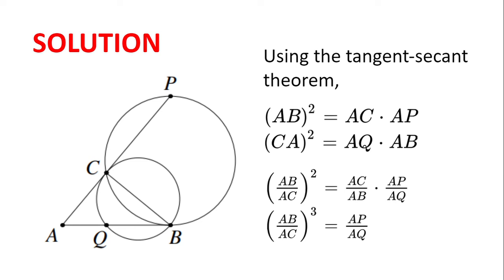Now, using the tangent secant theorem on the smaller circle, AC squared is equal to AB multiplied by AQ. And then multiplying both sides by AB and dividing both sides by AC, we get AB divided by AC cubed equal to AP divided by AQ as required.